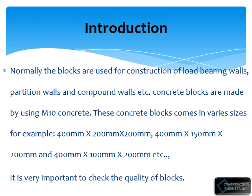Concrete blocks are made by using M10 concrete. These concrete blocks come in various sizes, for example 400 mm length, 200 mm width, 200 mm depth. Width also varies — 150 mm and 100 mm — with the rest of the dimensions remaining the same. Blocks of whatever sizes are required can be made.